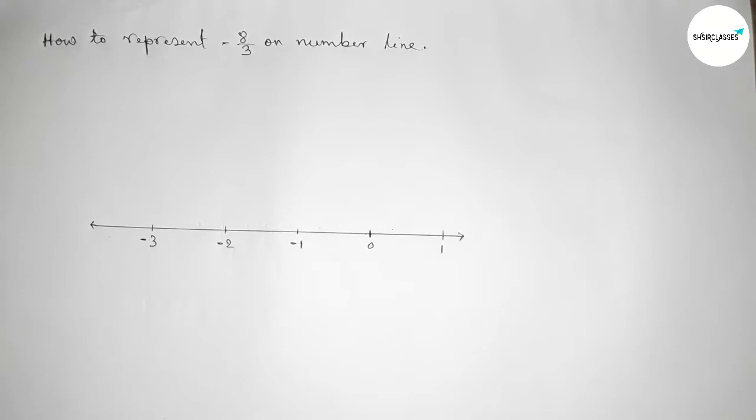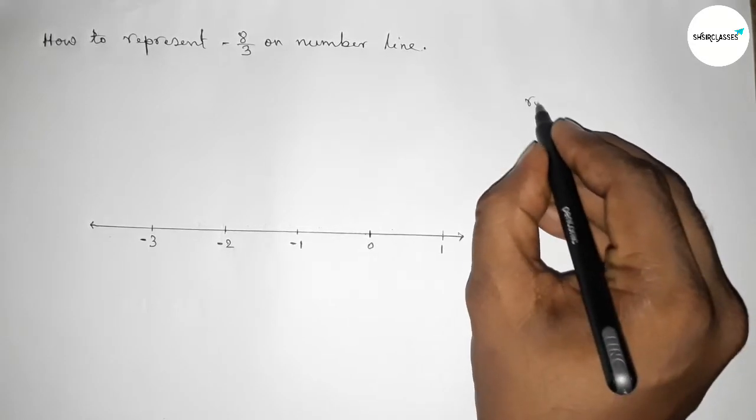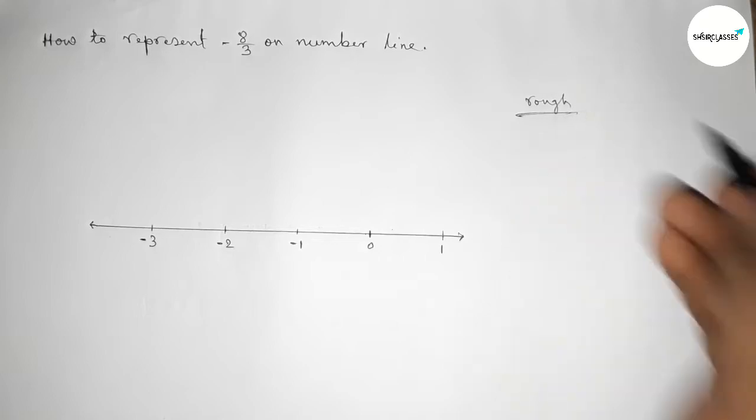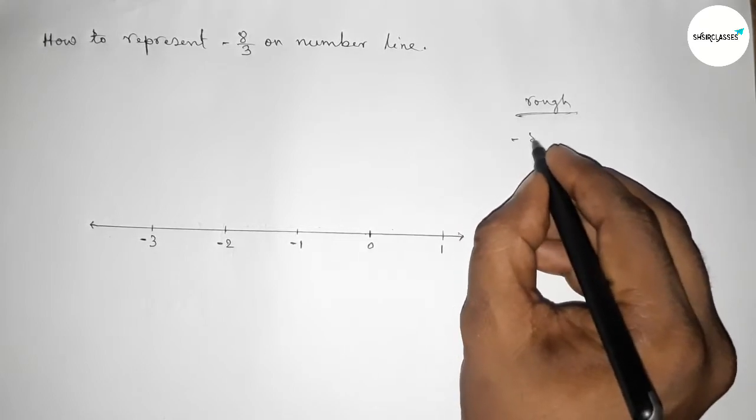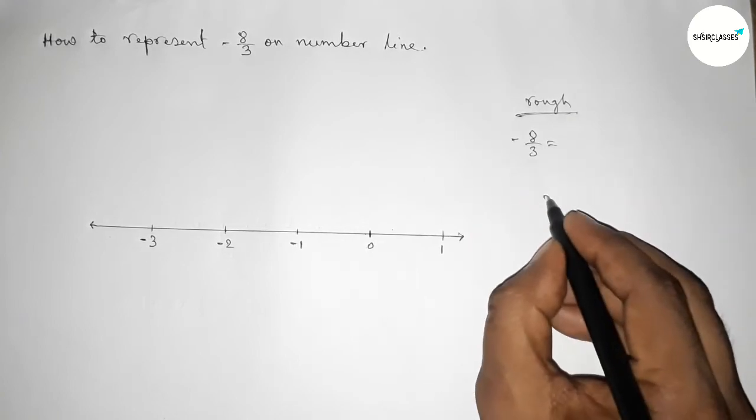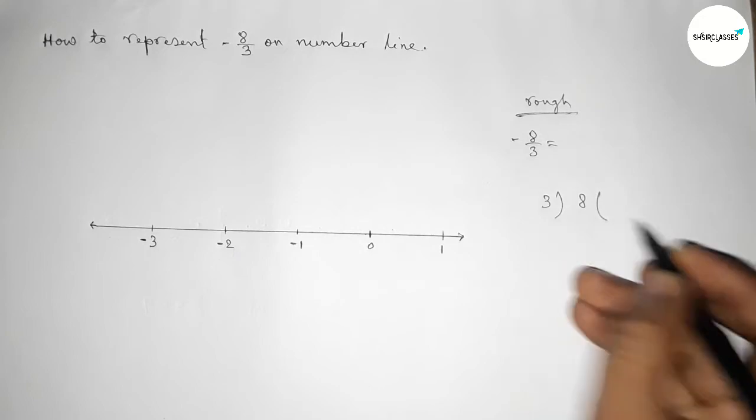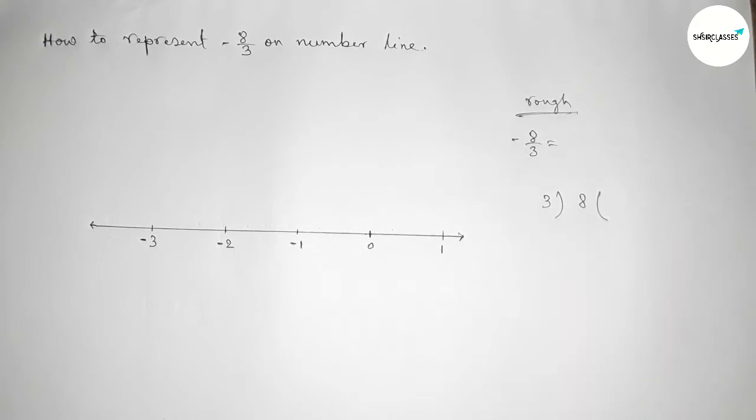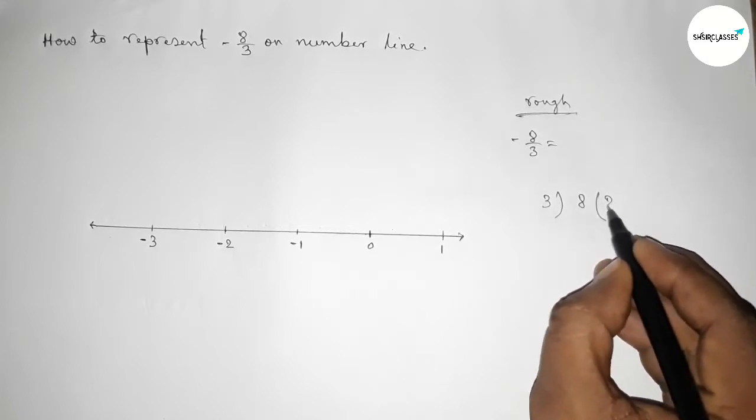Now roughly discussing some important calculation. Here the fraction is minus eight by three. Now finding this value, if you divide eight by three, first three into zero is six, so three into zero is six. Now subtracting this, so two.